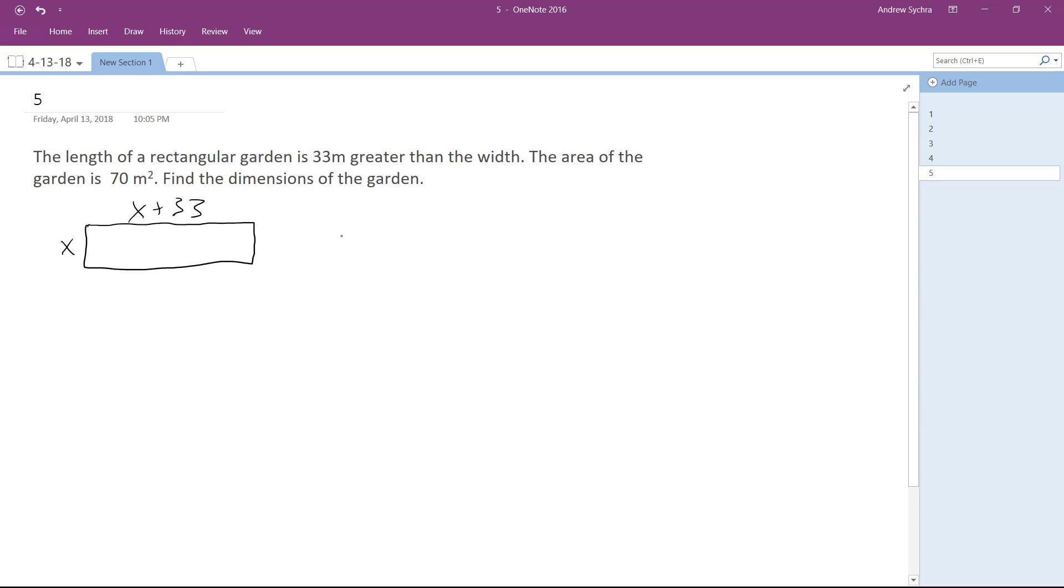Alright, and the area is 70 meters squared, so it's going to be x times x plus 33 equals 70. So what we'll have is x squared plus 33x equals 70, x squared plus 33x minus 70 equals 0.